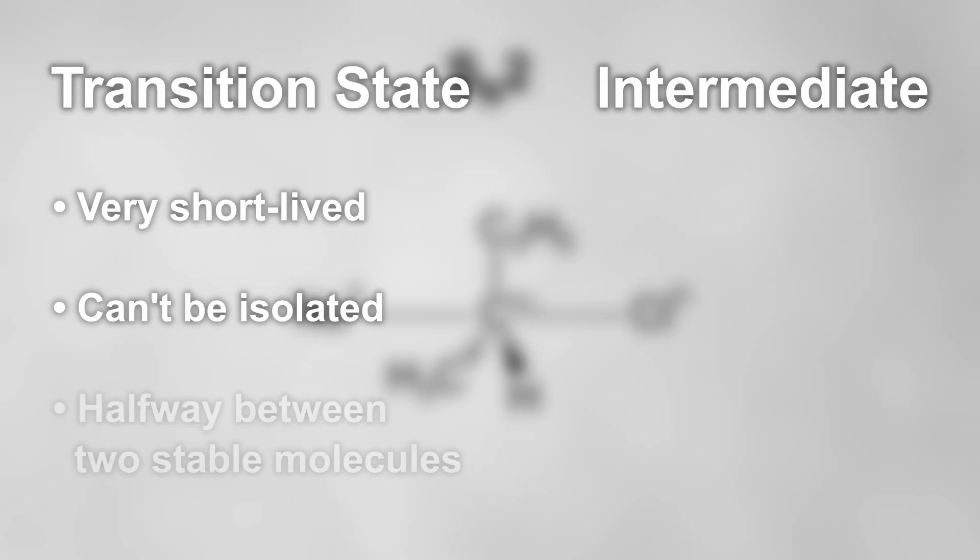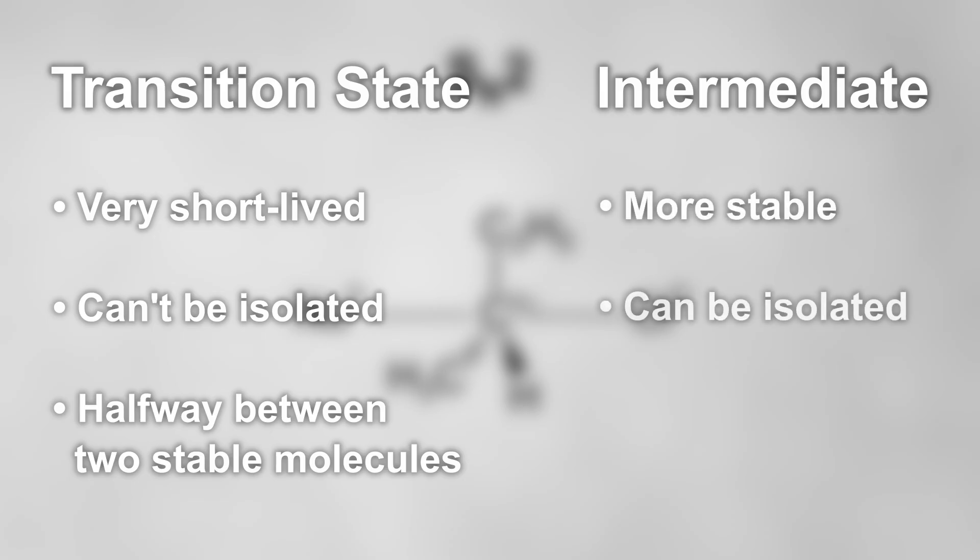By the way, a transition state is not the same as an intermediate. A transition state is very short-lived and can't be isolated, as it's essentially halfway between two stable molecules. An intermediate is much more stable and can be isolated and detected. A carbocation is an example of an intermediate.